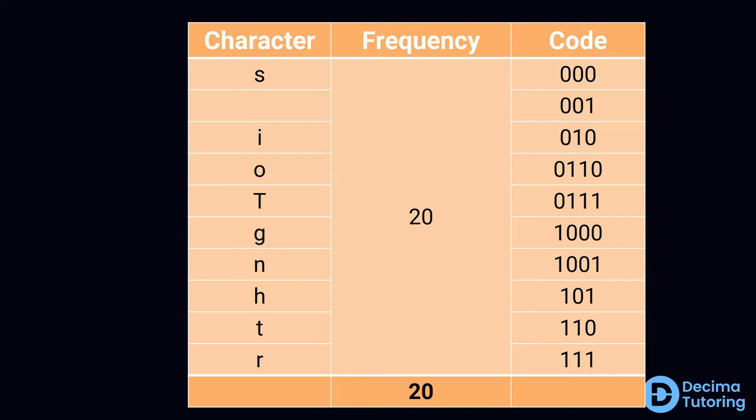And so compared to our original string, where each character took eight bits of data to represent, you can see that from the Huffman table the most a character needs to be represented is four. Minimum is three. And so this will take much less memory than the original string did. But before we go ahead and do the encoding on our string, let's take a look at a more commonly used visualization of Huffman coding. The familiar Huffman tree.